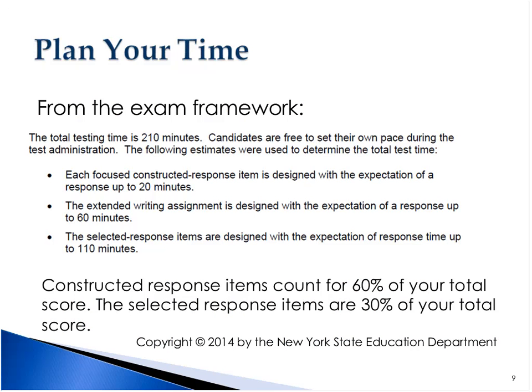One strategy might be to start with the writing section of the test first, as it makes up over half of your score. You could spend the suggested amount of time on the written items — 20 minutes for each of the shorter focused responses and a full hour on the extended writing response — and then move on to the reading section, coming back to the writing section if you have time at the end. Or you may choose to start with the reading, move on to the writing, and then return to review your answers to the reading section at the end. You'll want to think about how the exam is scored, the suggested time for each section, and your own testing strengths in planning how you will complete the exam.